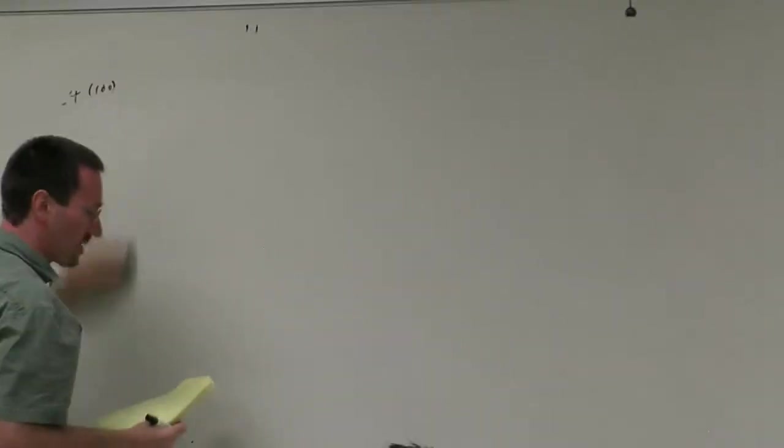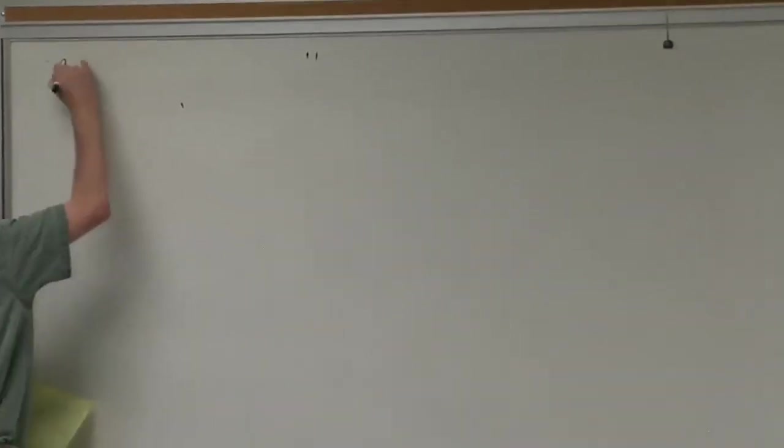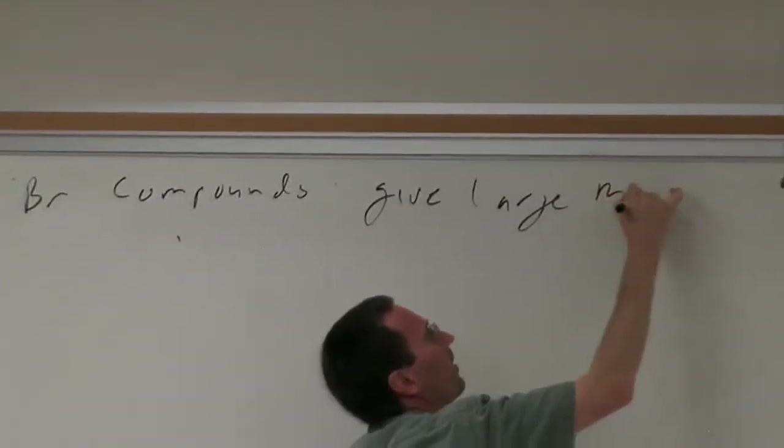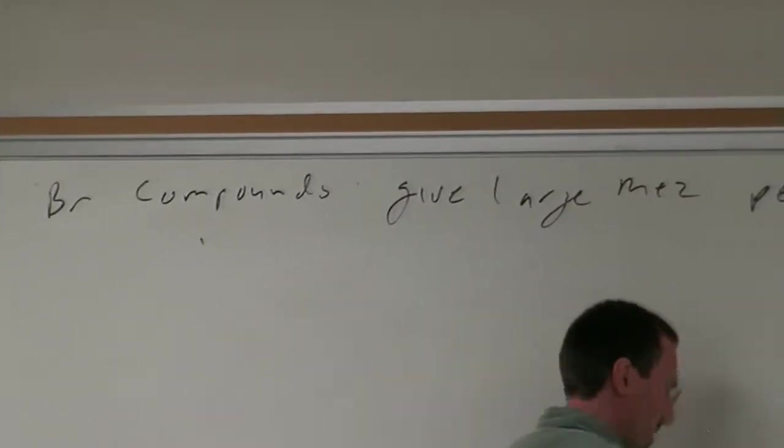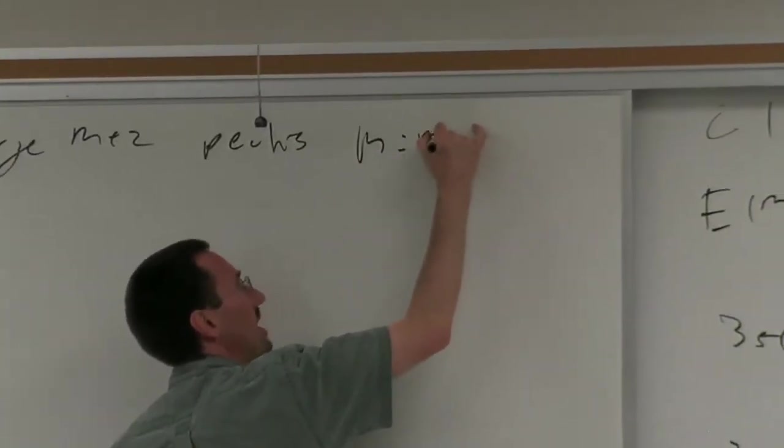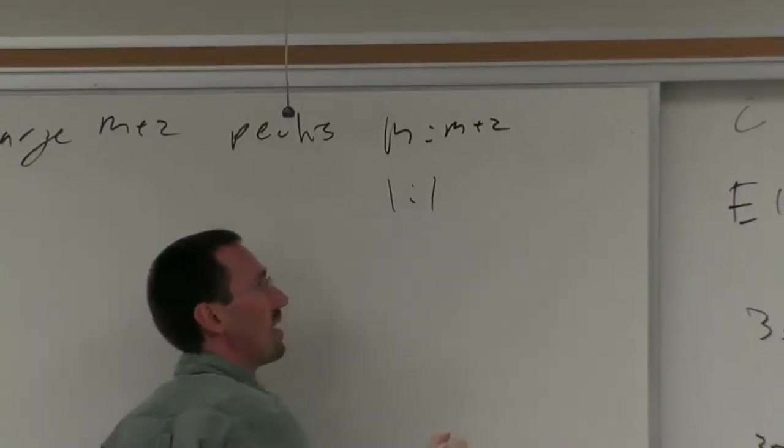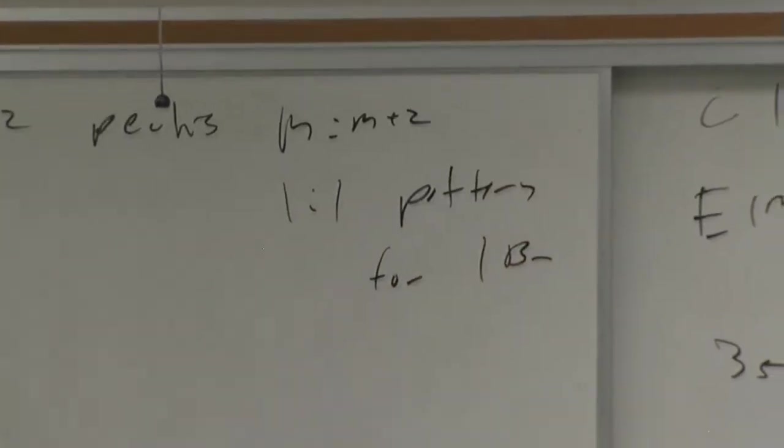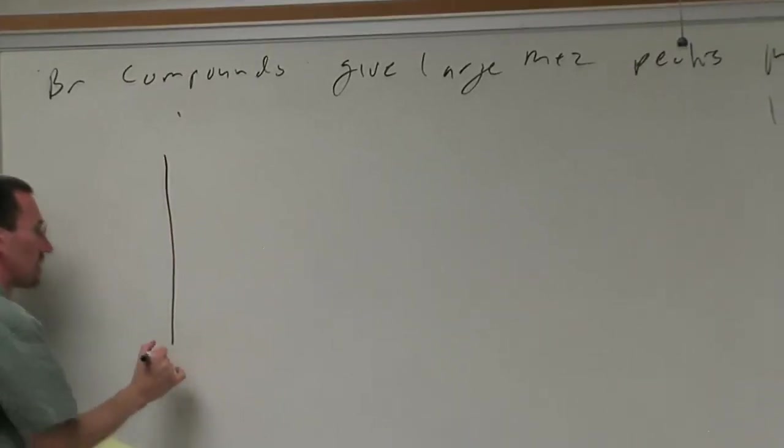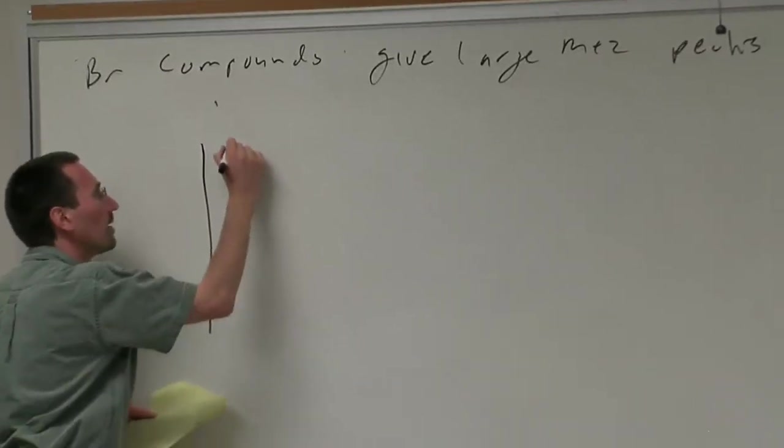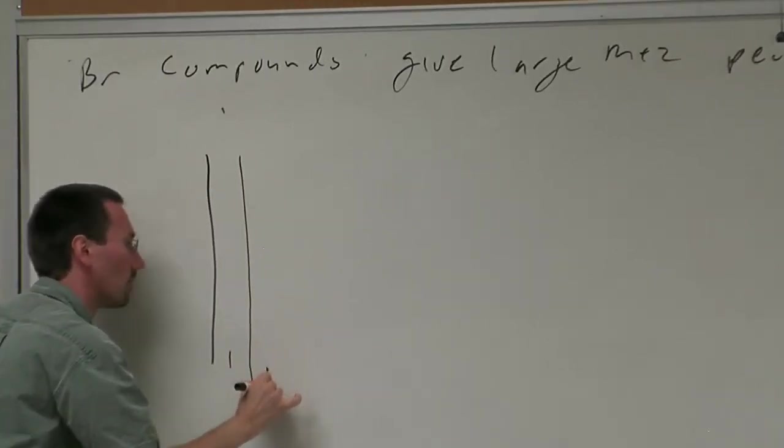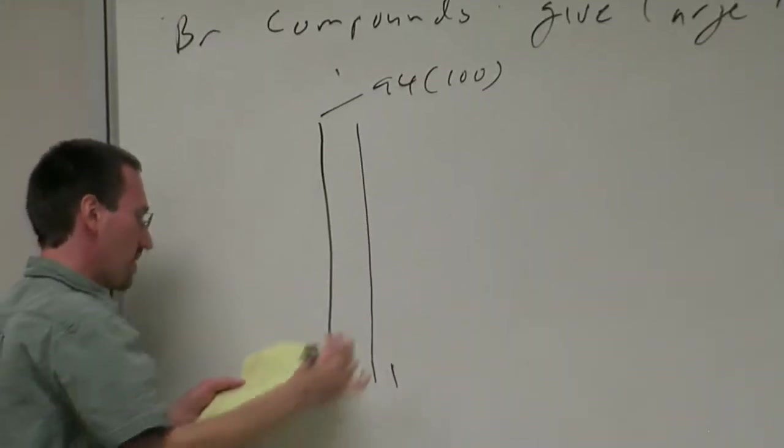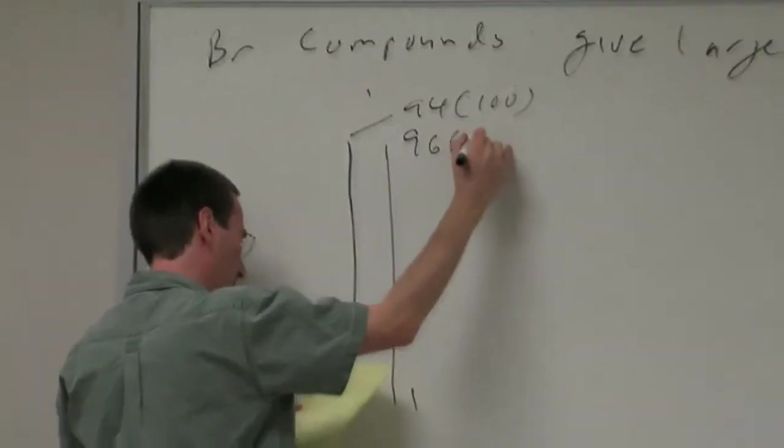Bromine compounds give very large M plus 2 peaks, 1 to 1 pattern for one bromine. Let's try one more example. An EI mass spec, let's say we're at 94 with relative intensity of 100, 96 with relative intensity of 98, and a little guy at 95 with intensity of 1.1 and a little guy at 97 also with relative intensity of 1.1. Who am I?